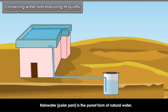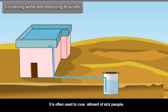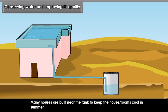Rainwater is the purest form of natural water. It is often used to cure ailments of sick people. Many houses are built near the tank to keep the house or rooms cool in summer.